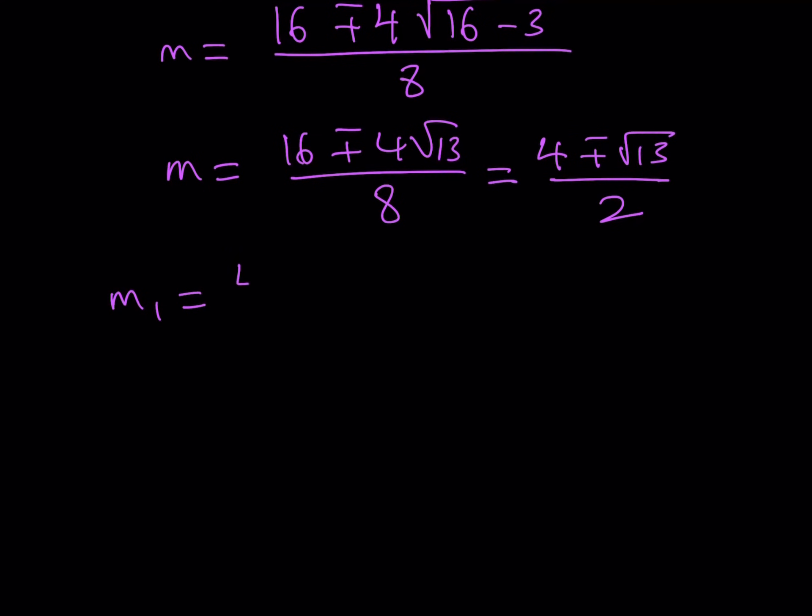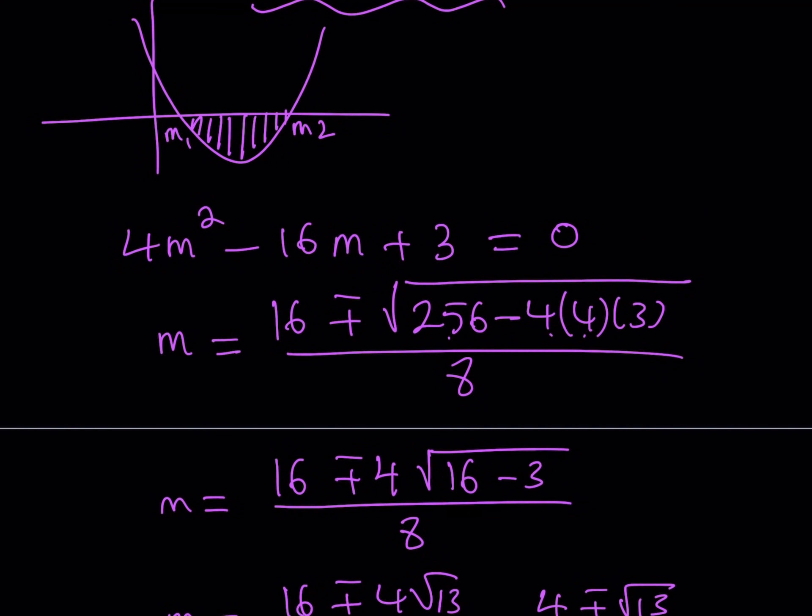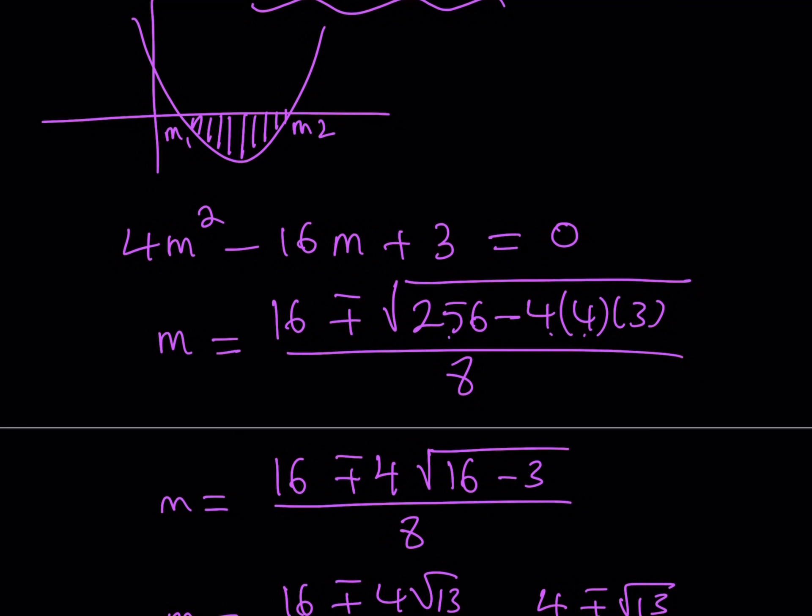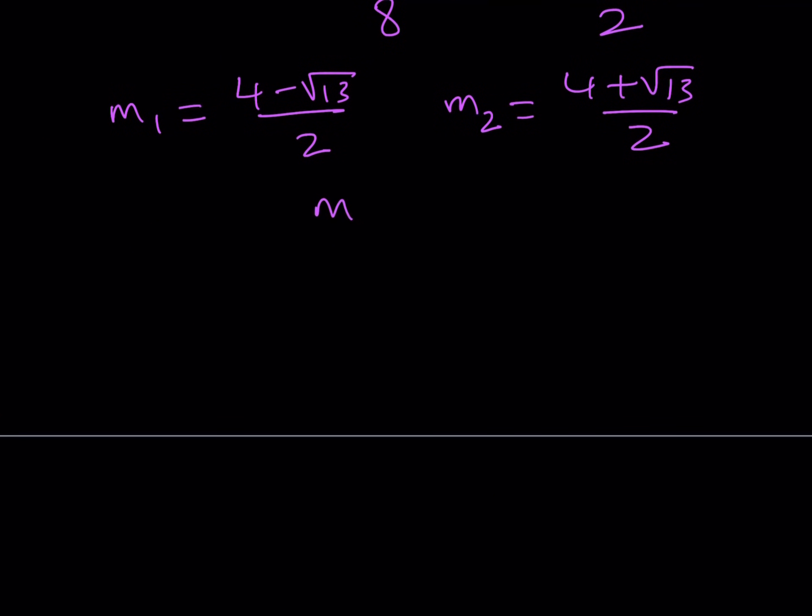Let's go ahead and write them down separately. So m1, the smaller value, is going to be this one, and the larger m value is going to be this one. And as I said earlier, if you want this quadratic to get negative or less than equal to zero values, non-positive values, then you have to be between m1 and m2.